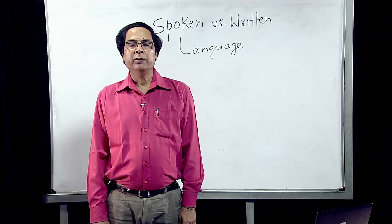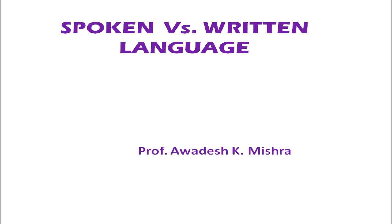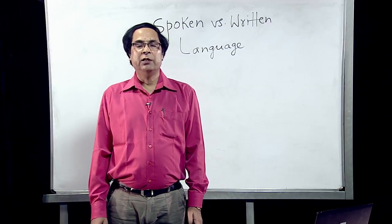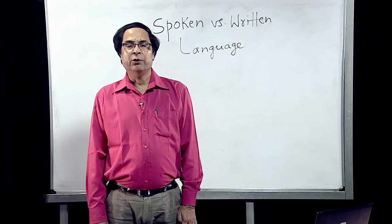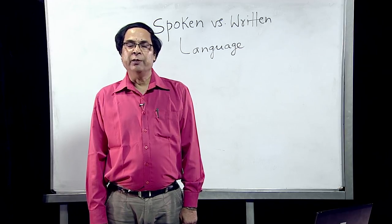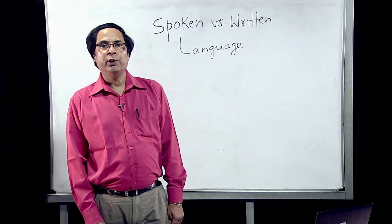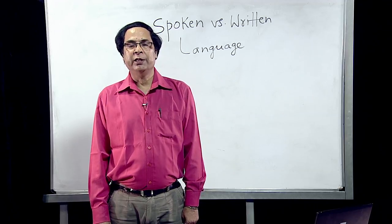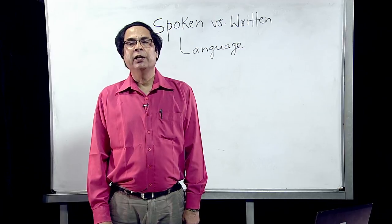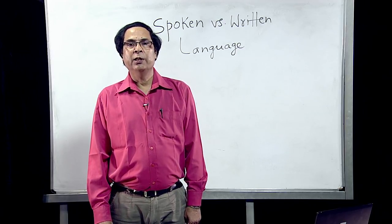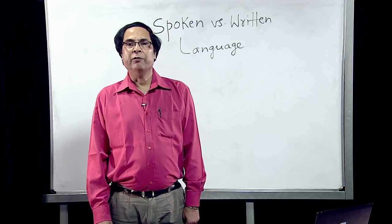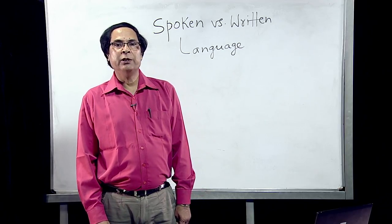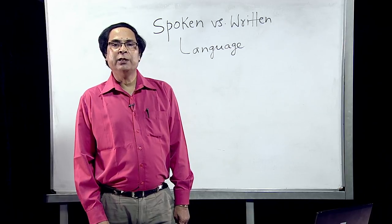Friends, today we are going to talk about the differences between spoken language and the written language. India has so many languages, about 400 or so, spoken in various states. Some are included in the 8th Schedule — 22 languages — and some are non-scheduled languages, including three foreign languages: Arabic, Persian, and Pashto. We have 100 languages spoken by fewer than 10,000 persons each, and not all languages are always written.